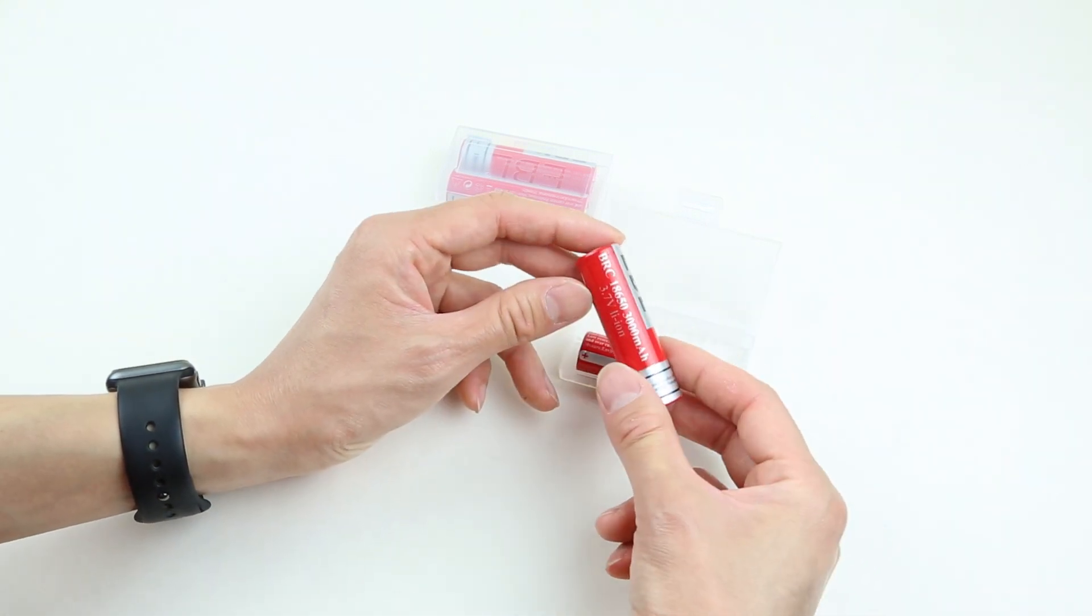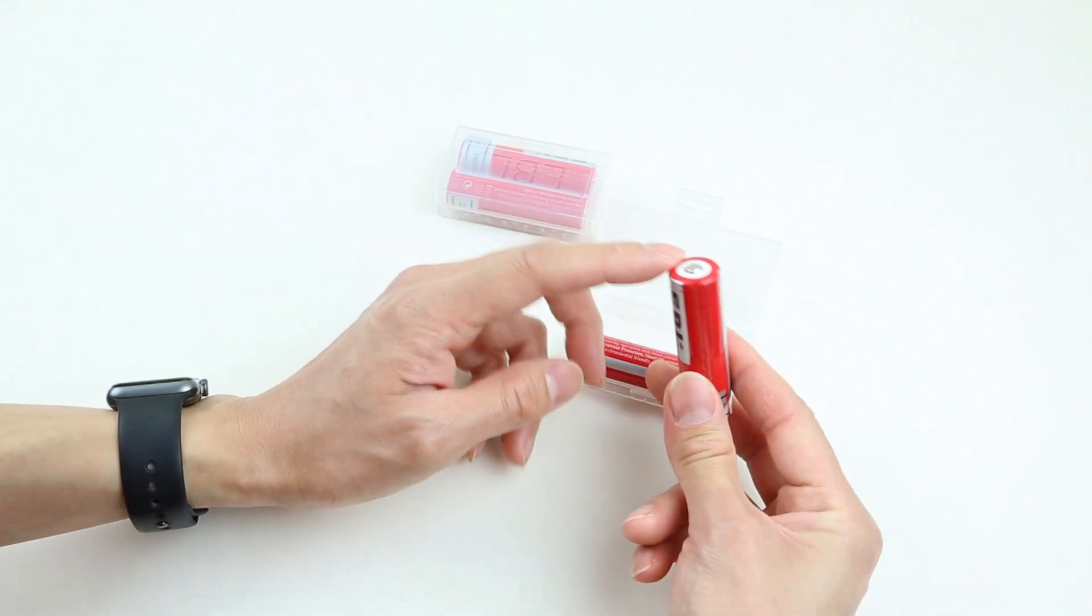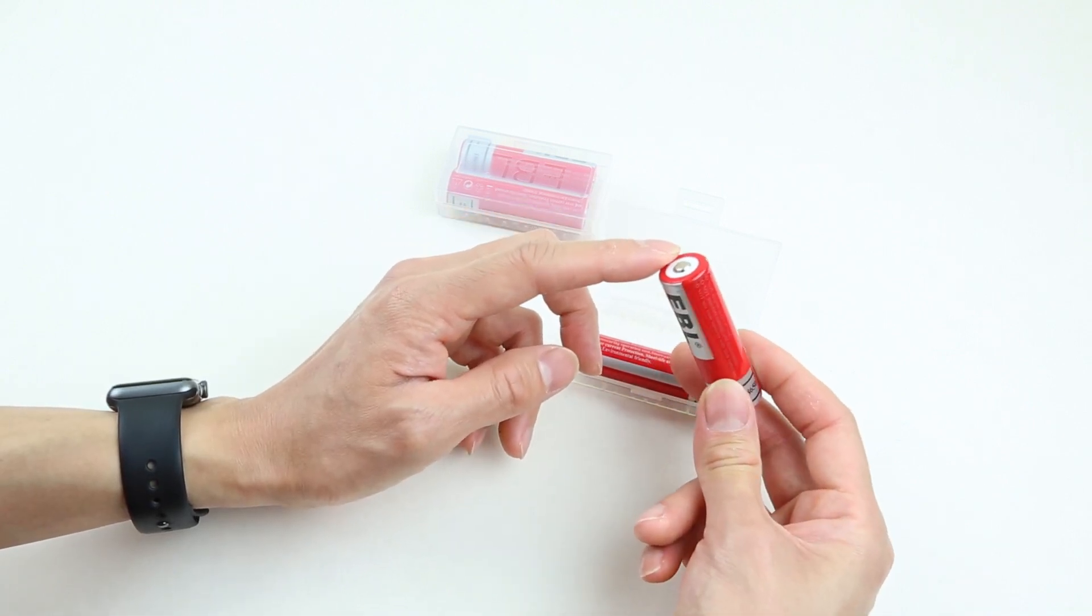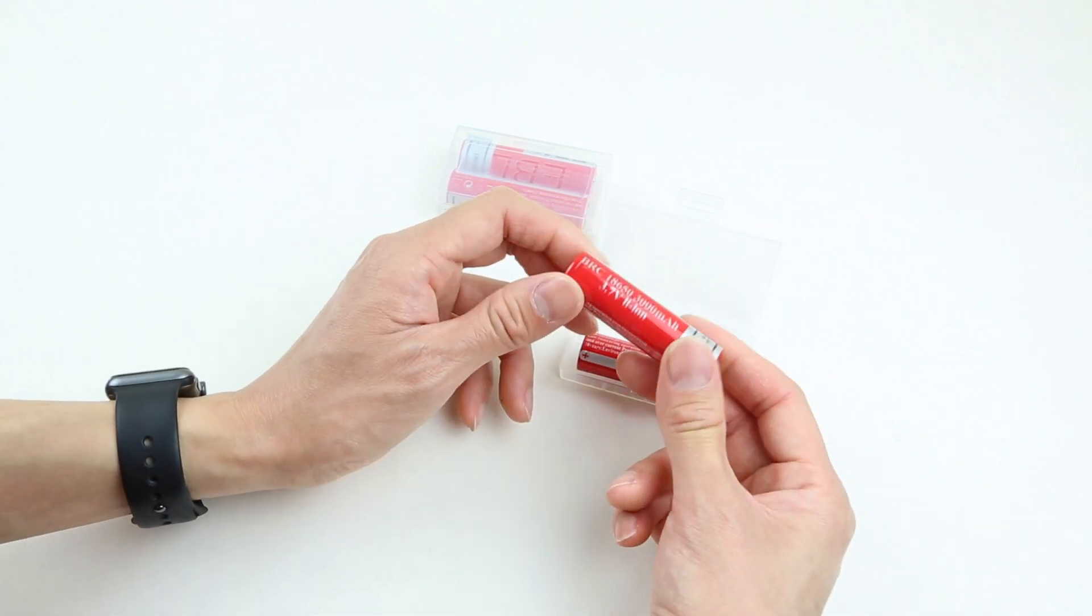These particular 18650 cells have button-top design, which is different from a lot of flat-top design. With the button-top design, it's very safe, and you can see the insulation and the wrapping all the way around the battery makes these type actually very safe to use.